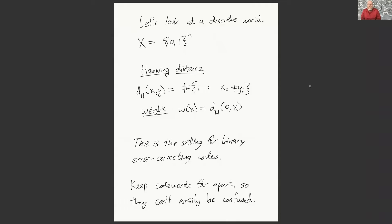This is a really important setting in practice because it's the setting for binary error correcting codes. If we're storing or transmitting binary data, we may want to have codewords that we keep far apart from each other, so that even if they get slightly corrupted, they can't be confused with each other. That naturally fits in a discrete setting like this. Information theory deals with both continuous and discrete settings — the simplest one is just binary error correcting codes like this.